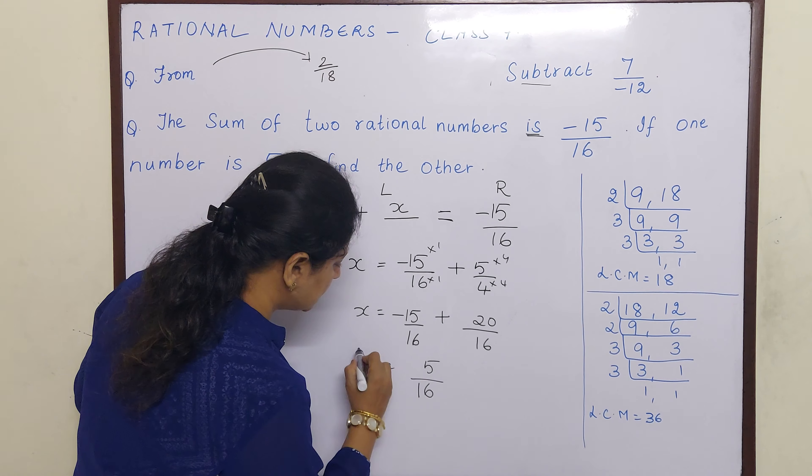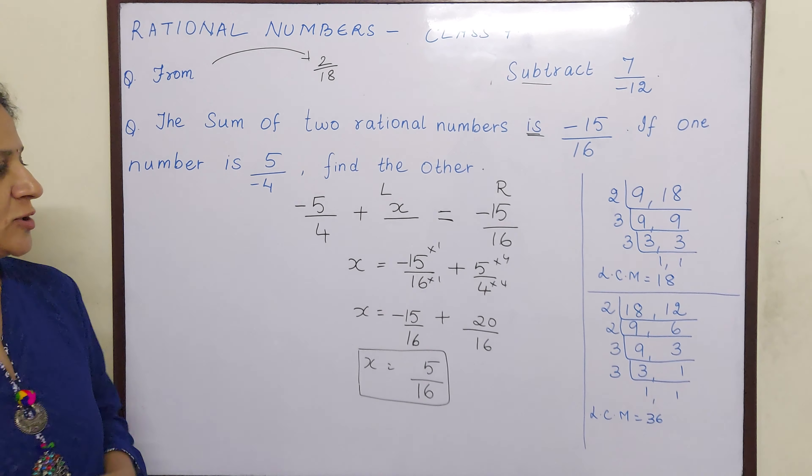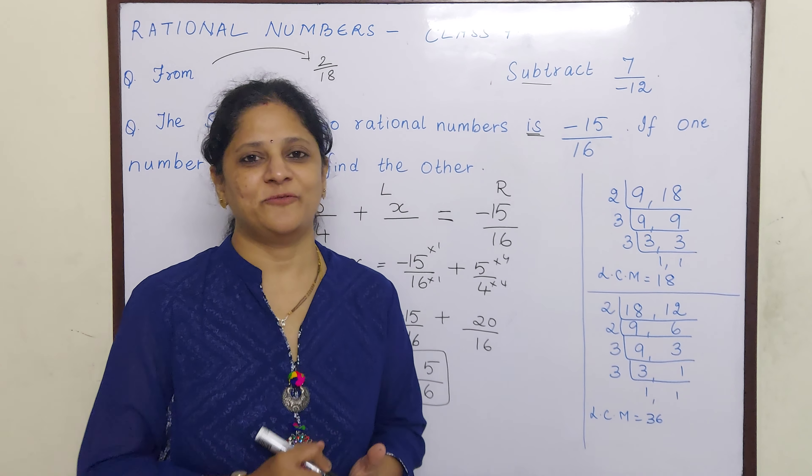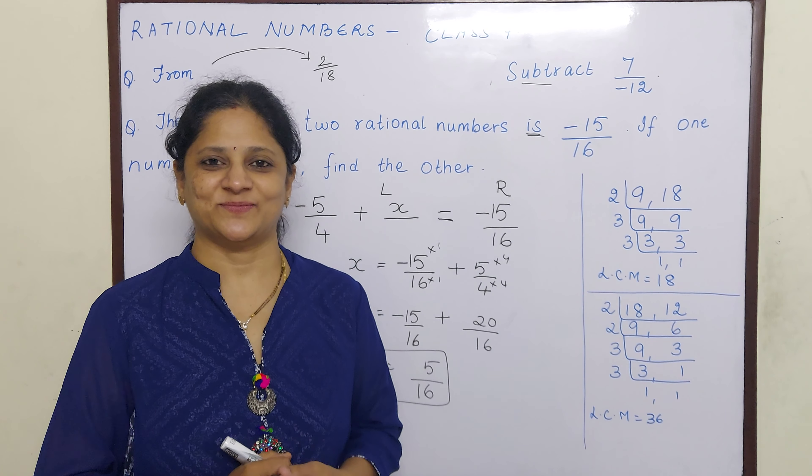We have learnt that in subtraction, whatever number comes after 'from', that only we will take first. So our next step is we will write 2 by 18, and subtract means minus 7 by minus 12. Now whenever the denominator is carrying a negative sign, we just shift it to the numerator and keep the denominator free of the negative sign. So now before this number there are 2 negatives, and minus into minus is plus 7 by 12.